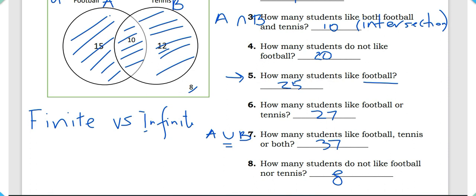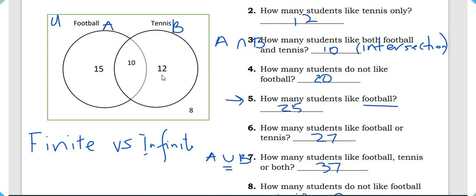You also need to know about finite sets and infinite sets. If you know what the words 'finite' and 'infinite' mean, you already have a good idea. A finite set is simply a set that has a fixed number of elements. An infinite set has no limit to the number of elements. In our survey example, the students were counted and presented in the Venn diagram — that is a finite set.